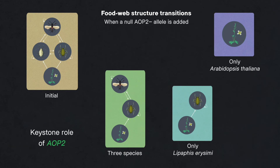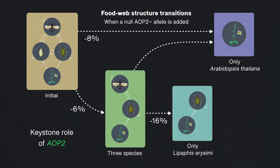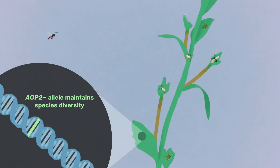The keystone role of AOP2 acted primarily to prevent the transition from the three-species food chain to the Arabidopsis-only state, with a null AOP2 allele reducing the weekly risk of this food chain transition by 67%. Taken together, our results show that variation at a single gene can control the persistence of interacting species in a food web.